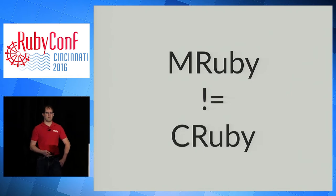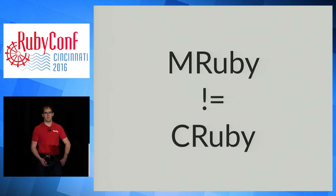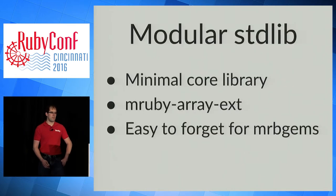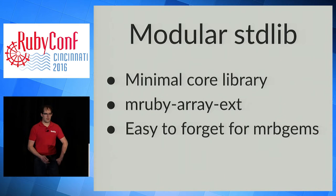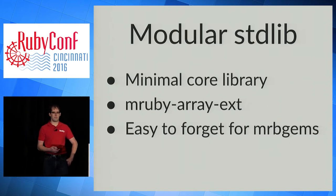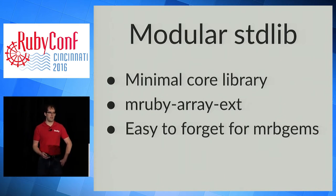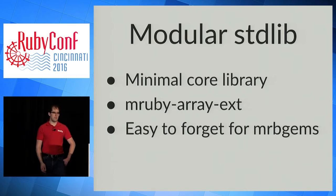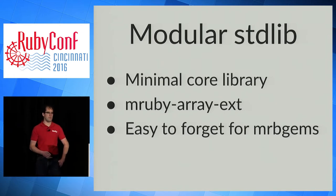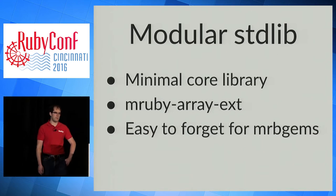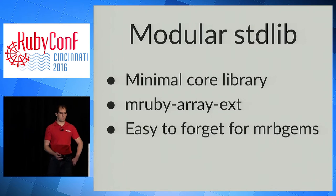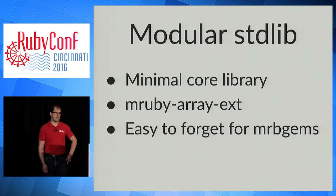When I first heard about MRuby CLI I thought it sounded easy, but I was sure there would be challenges. The first is that MRuby is not the same as CRuby — the implementation doesn't support everything CRuby does. The first problem I had was the modular standard library. MRuby's core library has classes like String, Array, and Hash, but they only support a minimum number of methods. For the full CRuby experience, you have to add extension gems like mruby-array-ext. It's easy to forget to add these extension gem dependencies, and without them the gem won't work in another project.